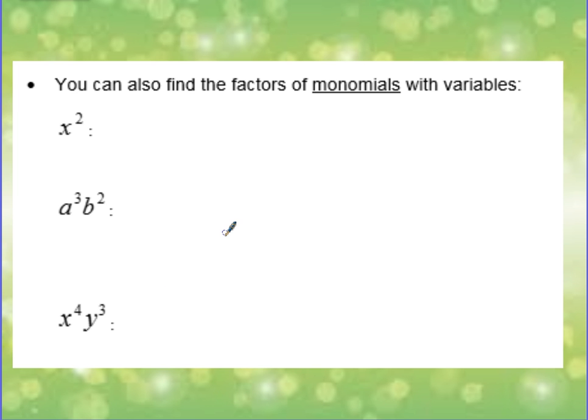If we can find the factors or list the factors of numbers, we can also find the factors of monomials, including variables. For example, x squared. If you think about what we can multiply to get x squared, here are some examples. We can always start with 1 and that term. So 1 and x squared will multiply to give you x squared. If we take apart x squared, we could multiply x and x to give us a product of x squared.